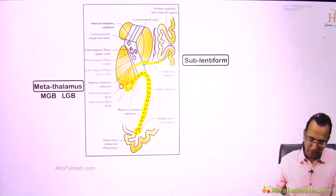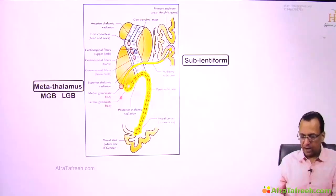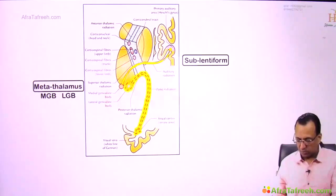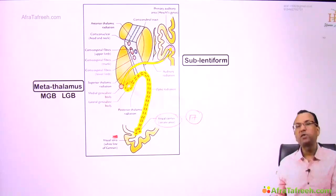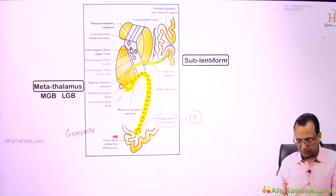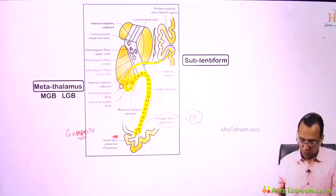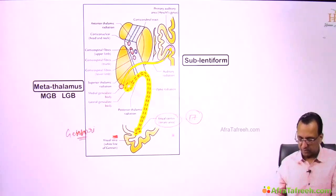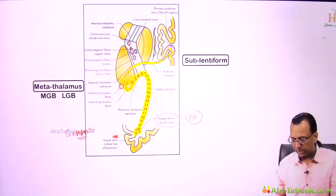The visual pathway uses the lateral geniculate body, which sends signals toward the occipital visual cortex — area number 17, called the striate cortex. It is called the striate cortex because there are striations of Gennari in the occipital visual cortex.